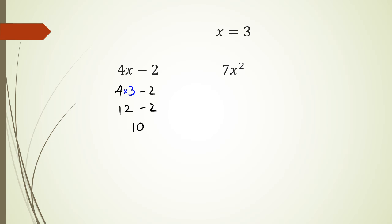Next one, I've got 7x squared, so this is going to be 7 times 3 squared, and that's basically it. So we've got 7 times 3 squared is 9, so we're going to get 63.